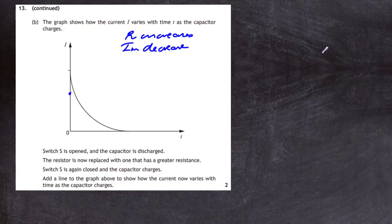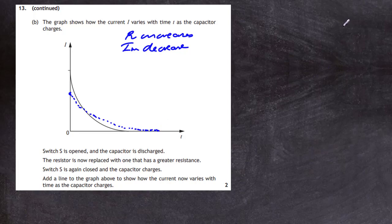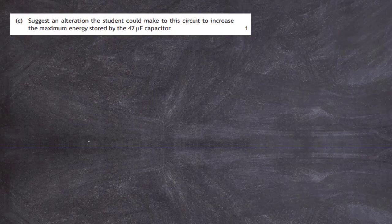A bigger resistance means less current flowing, so the maximum current is lower. Because resistance is increased, the current decreases and therefore the capacitor takes longer to charge up — like a tap on your sink: increase the resistance of the tap and you get a smaller dribble of water. The current takes much longer to reach zero, and the key points are: the new maximum current is smaller, and the time to become fully charged is longer.